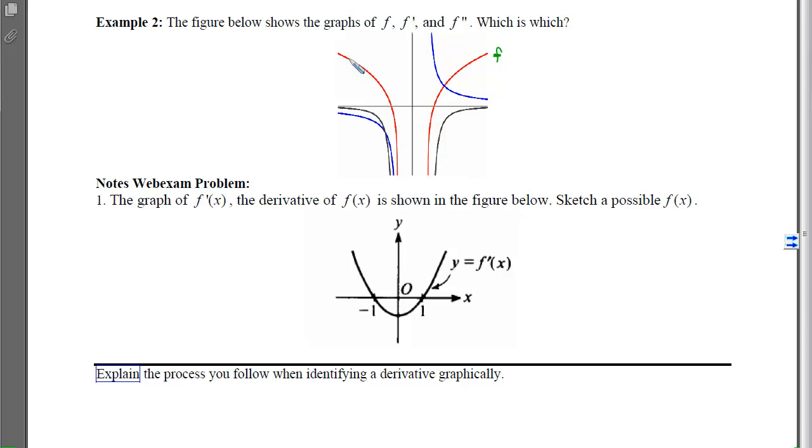So now let's think about what the derivative of this would look like. We're falling all the time here and then we're rising. So that means the derivative would have to be underneath the x-axis and then above the x-axis. So the only curve that's underneath and then above is this blue one. So that means the blue one will be f prime.